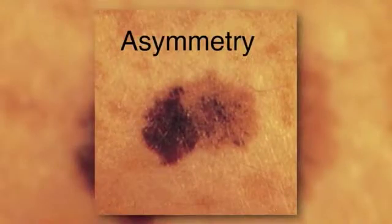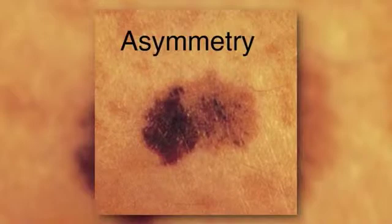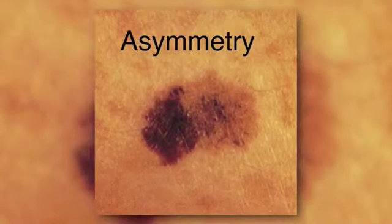So if you could walk us through these images and let the folks at home know what they should be looking for. So A is asymmetry, meaning it doesn't look the same all around, and if you flip it over, it's not going to be the same.